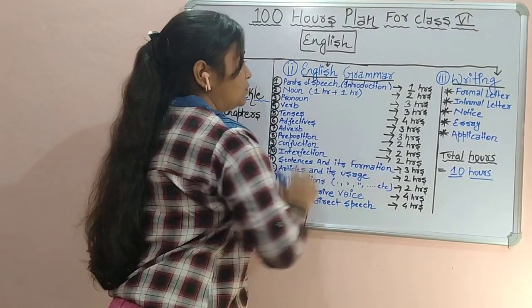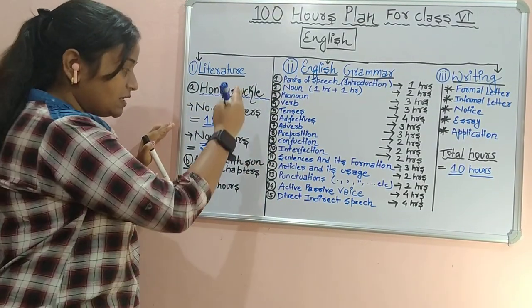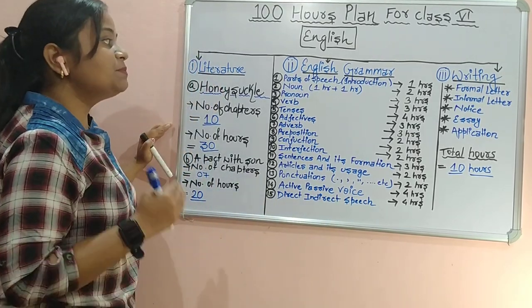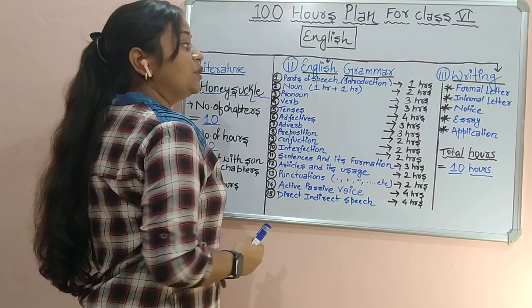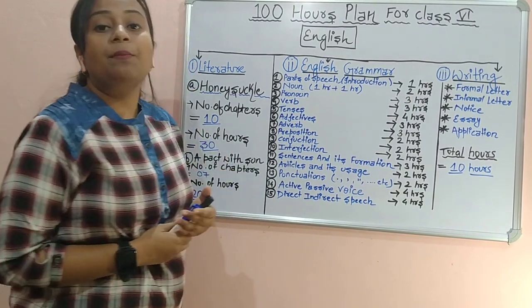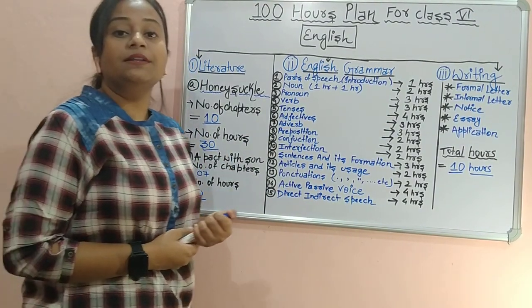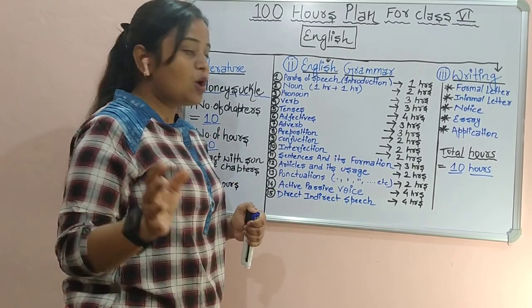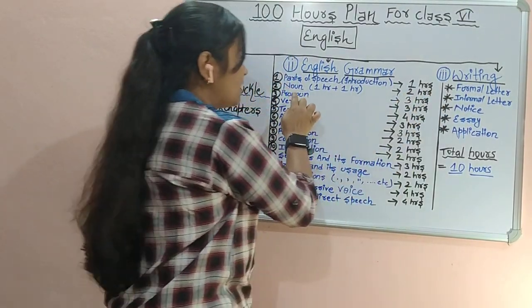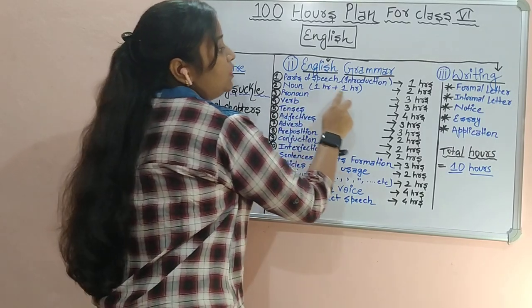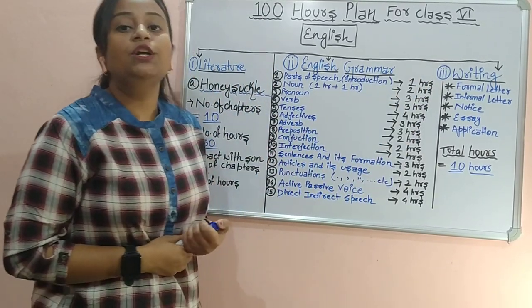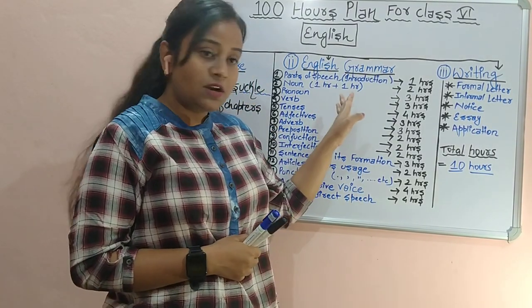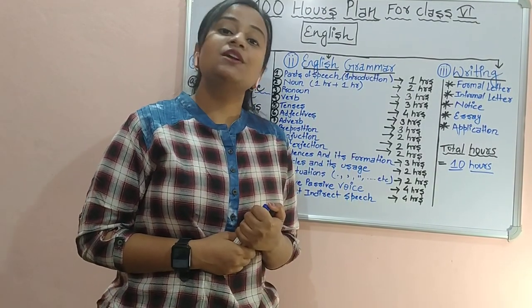Now coming to the English Grammar portion. In English Grammar, there are 15 chapters. The first chapter is Parts of Speech — we will learn about all eight parts of speech, and it will take approximately one hour. Then Noun will take two hours: in the first hour we will talk about noun and its identification, and in the further one hour, we will talk about the parts of noun.